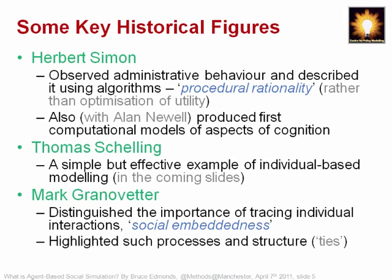That was contrasted with what he called substantive rationality — basically a utility account. Not only did he describe people in algorithmic terms from actual observation, he also produced some of the first computational models of cognition: how people solve problems, puzzles, chess problems in a computer. These two streams have now come back together with agent-based social simulation, although he didn't have the tools to bring them together. His later work tended to regress toward formal modelling with not-so-good ideas, like Satisficing and some mathematical models.